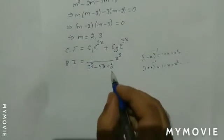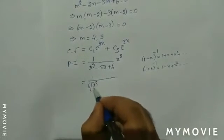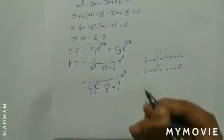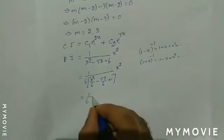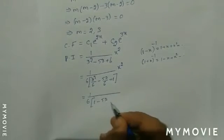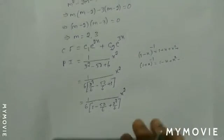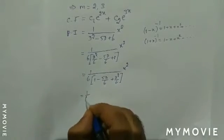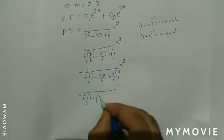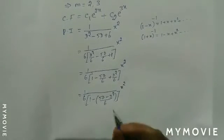Here we take 6 outside from the denominator, so this becomes 1 over 6 into (D squared over 6 minus 5D over 6 plus 1) into x squared. This is equal to 1 over 6 into (1 minus 5D over 6 plus D squared over 6) into x squared. We can write this as 1 over 6 into 1 minus (5D minus D squared) over 6, all raised to minus 1, into x squared.